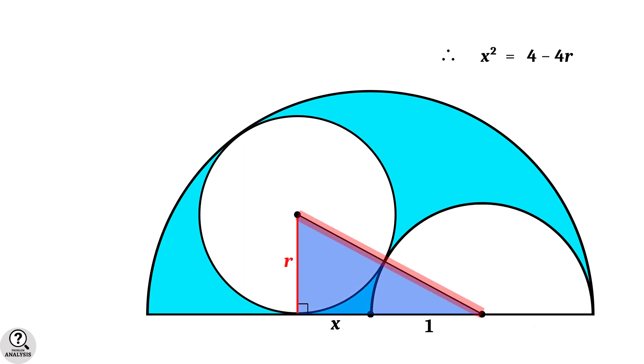Look at the hypotenuse. The upper part is a radius of the circle which is equal to R. And the lower part is a radius of the smaller semicircle which is equal to 1 unit. So the hypotenuse will be 1 plus R. And the base length is X plus 1.